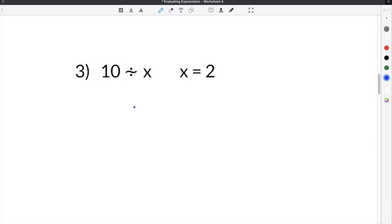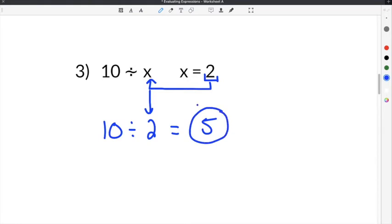Problem 3 gives us 10 divided by x. This time x equals 2, so we're going to take this 2 and substitute it in for x. Our expression is 10 divided by x, but x is 2, so it's 10 divided by 2. 10 divided by 2 equals 5. Our expression is evaluated and the solution is 5.